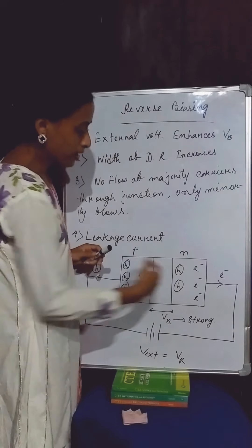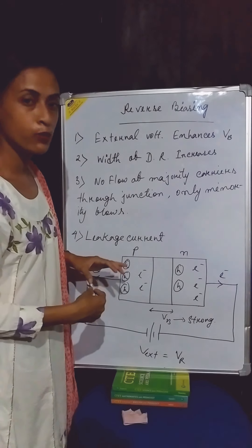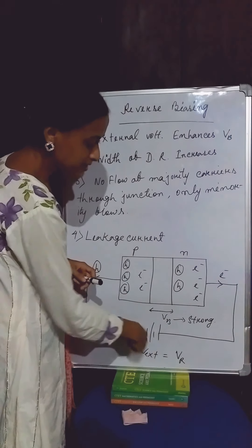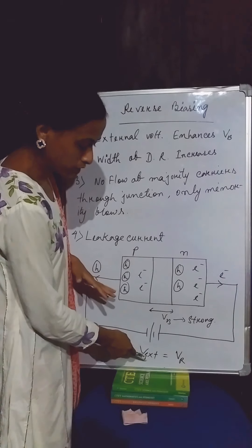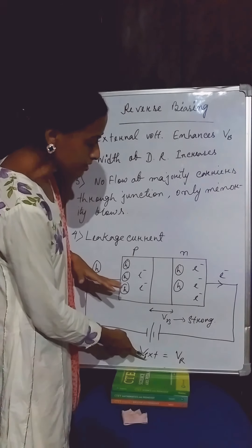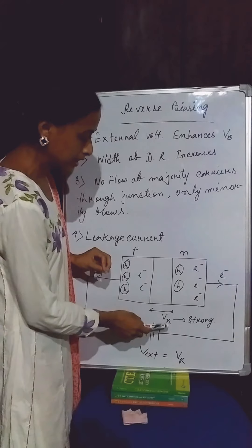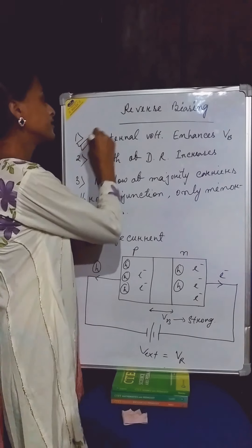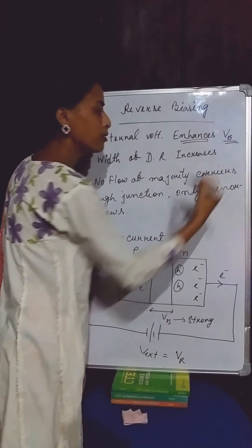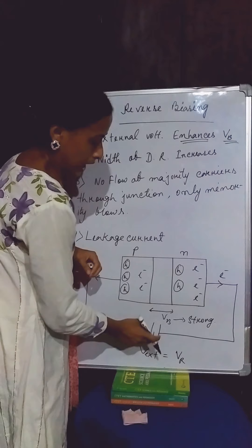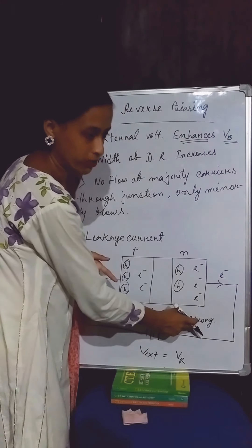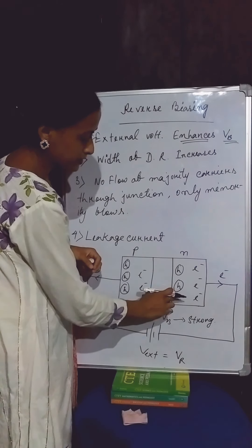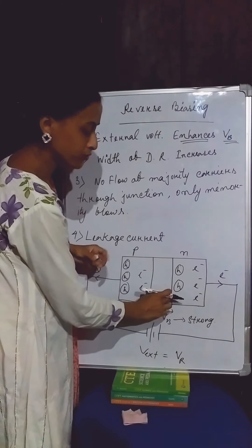So this overall connection is what we call a reverse biasing connection. And if a diode is kept in this connection, then the externally applied voltage — that means V external — always supports the barrier potential. Here I am writing: external voltage always enhances the barrier potential. So the barrier potential can become stronger in this setup. That means under the process of reverse biasing, the depletion region becomes wider.